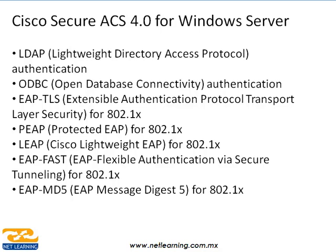¿Qué protocolos utiliza el Cisco Secure ACS? Podemos tener por ejemplo LDAP, autenticación por medio de un servidor externo al ACS. También nos podemos conectar a una Open Database Connectivity o ODBC. Y hay otros tipos de protocolos como EAP-TLS, PEAP, LEAP, EAP-FAST y EAP-MD5. Eso nos va a ayudar para poder utilizar el IEEE 802.1X y esto va a ser para autenticar usuarios en nuestra LAN o usuarios en nuestra wireless.